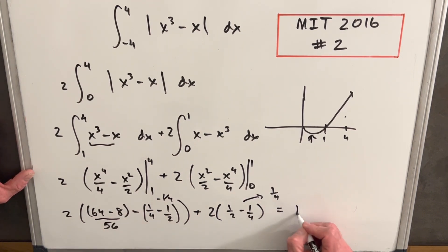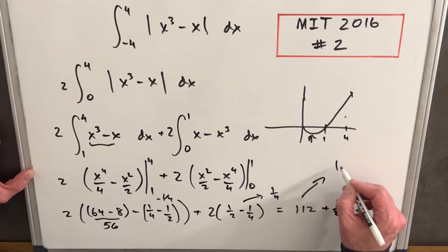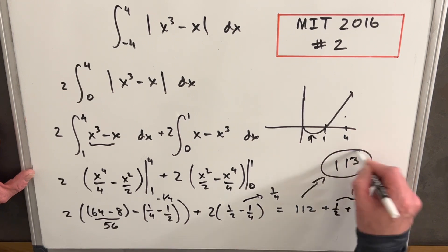So two times 56 is going to be 112. Minus times minus is a plus one. So this is going to be a plus one half here. And then here, we have two times a fourth is another half. That's just one. And so for our final answer, we are going to have 113.